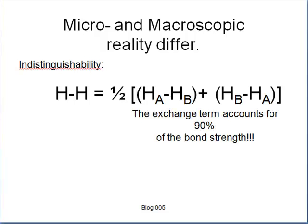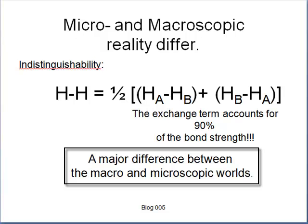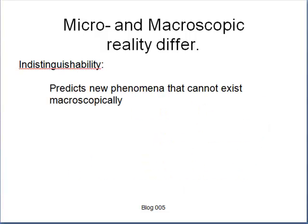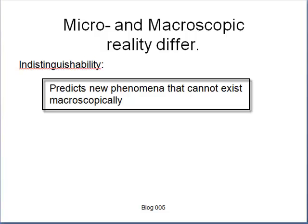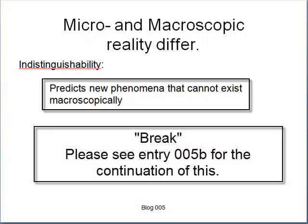Remarkably, if we do not symmetrize, then the calculation misses 90% of the bond strength. This purely microscopic property of indistinguishable particles cannot be ignored. It is a major difference between the microscopic and the macroscopic. In other words, indistinguishability predicts new phenomena that cannot exist macroscopically.